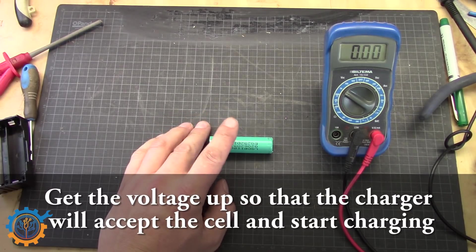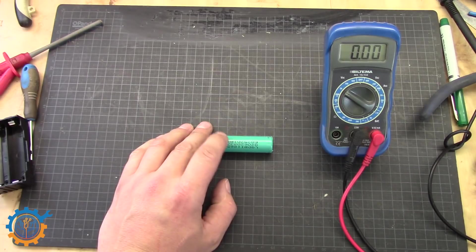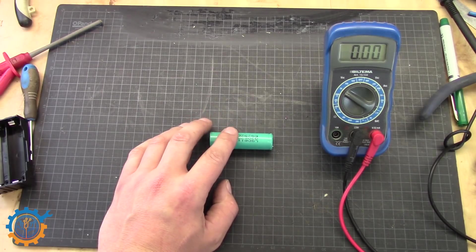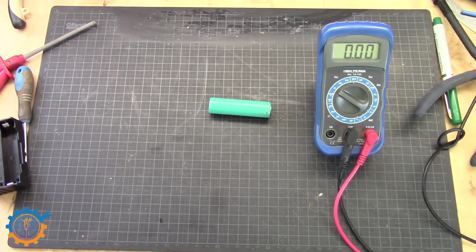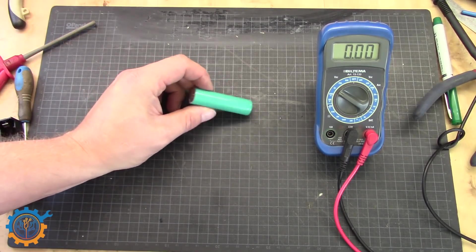It does not matter if they are at 0 volt or if they are at 1 volt or 2 volt. The problem is that some chargers, for instance the IMAX, won't even charge this cell.